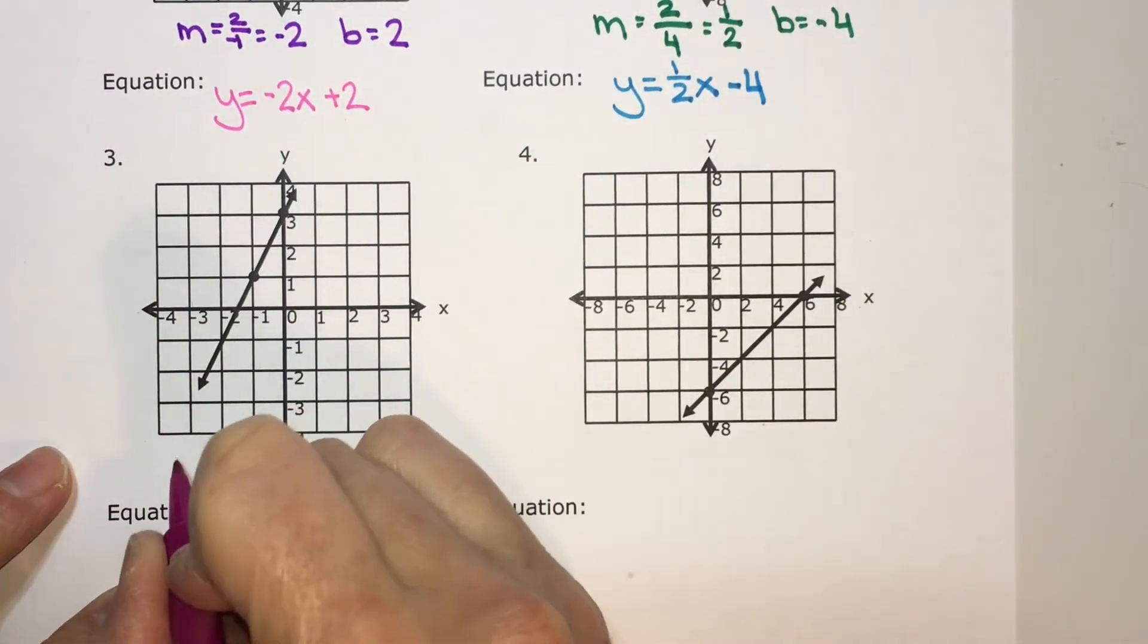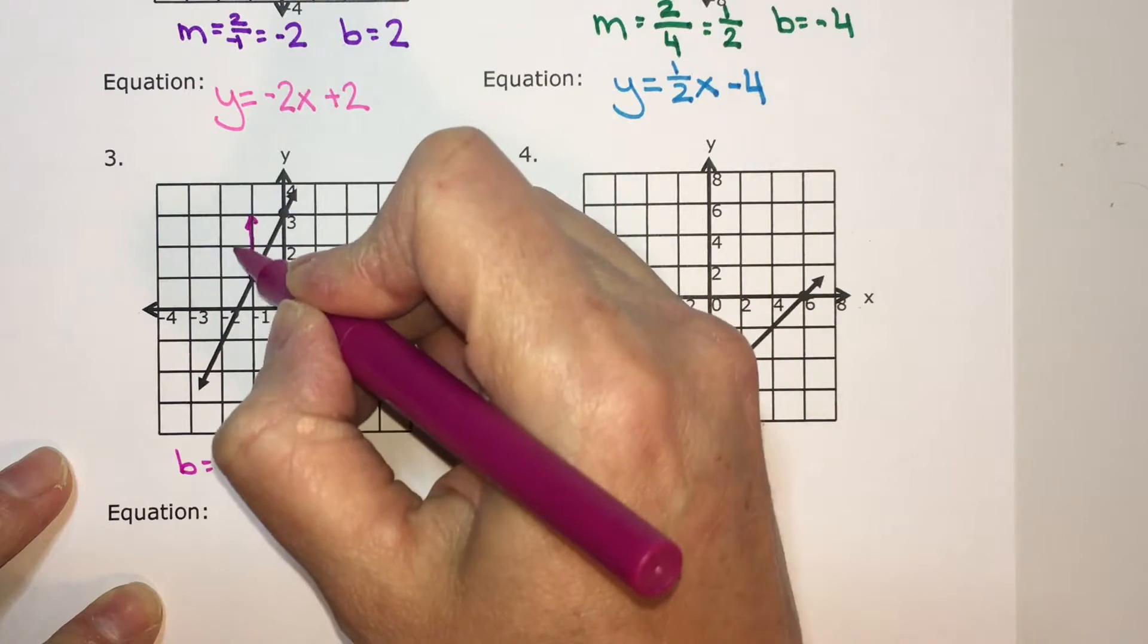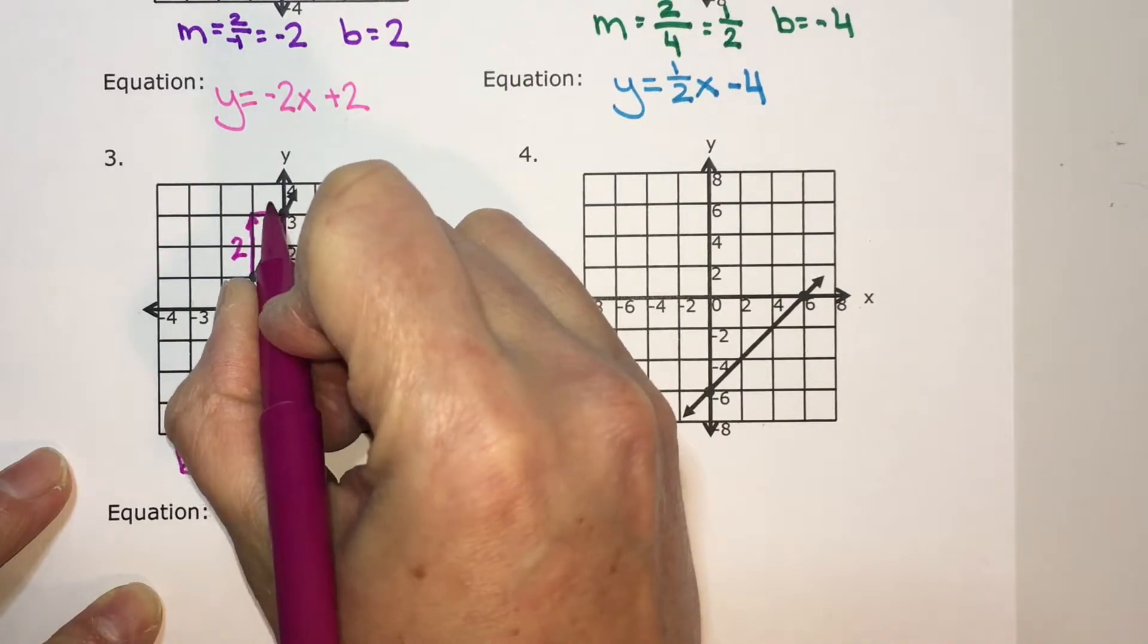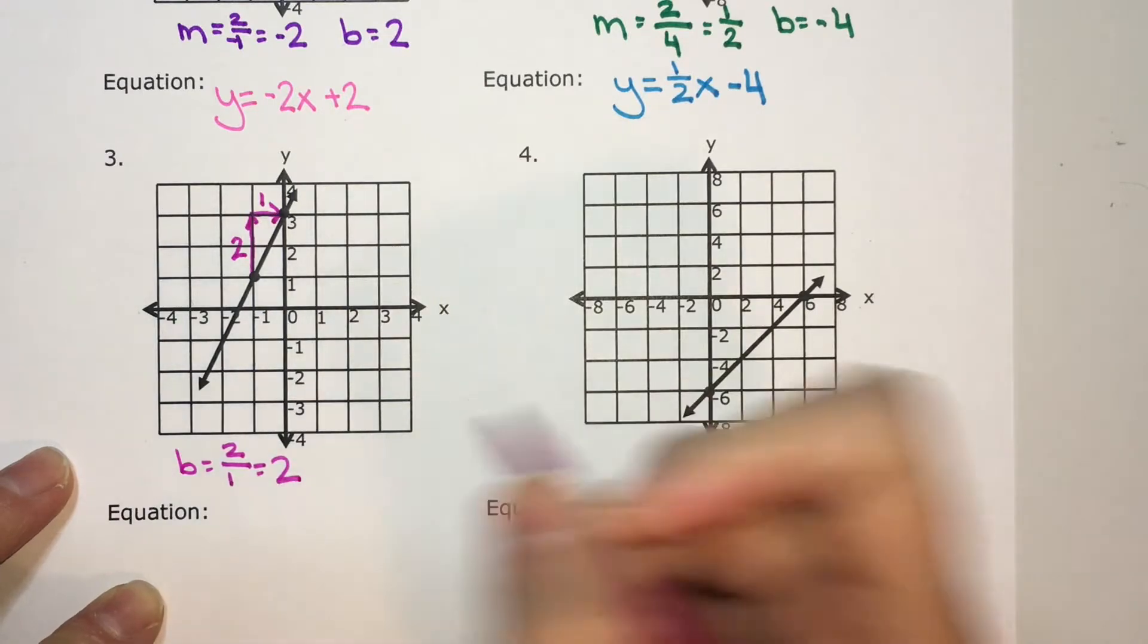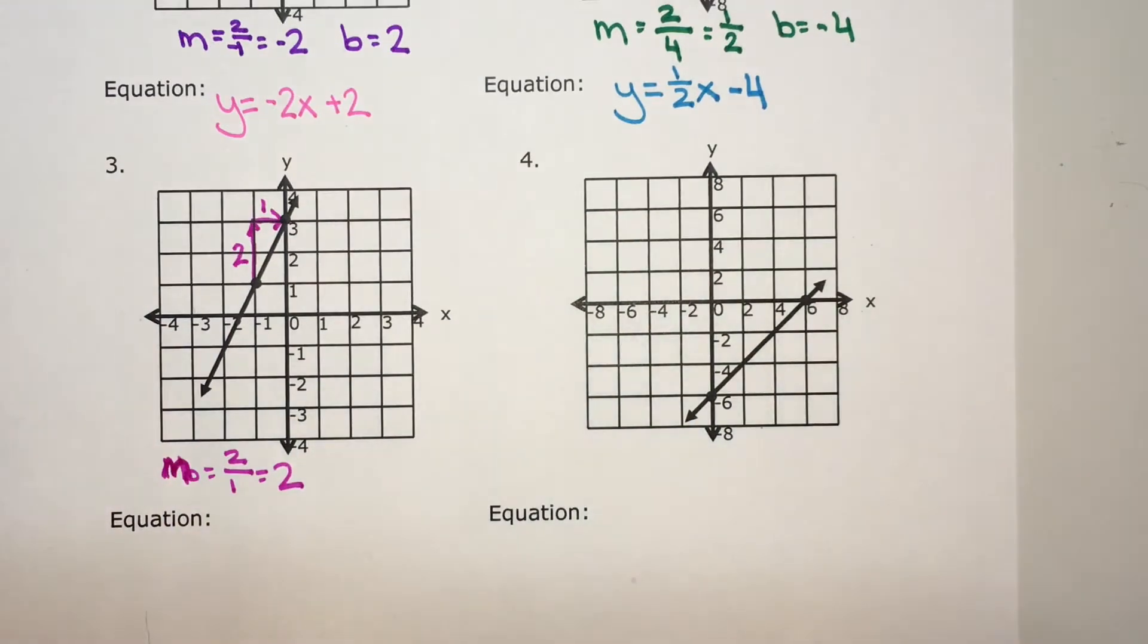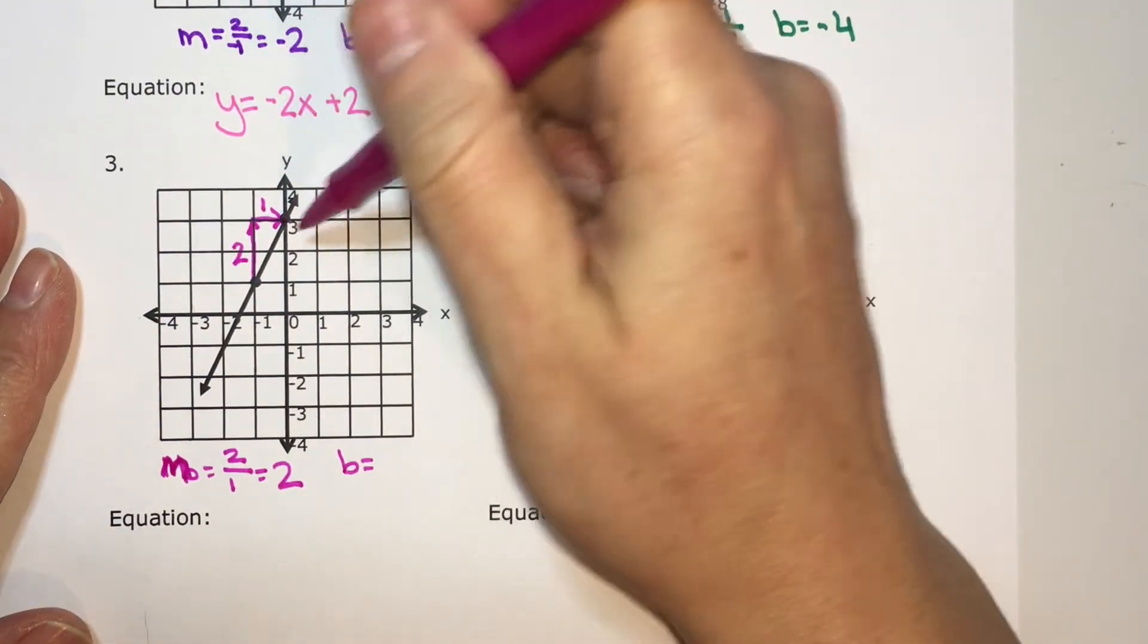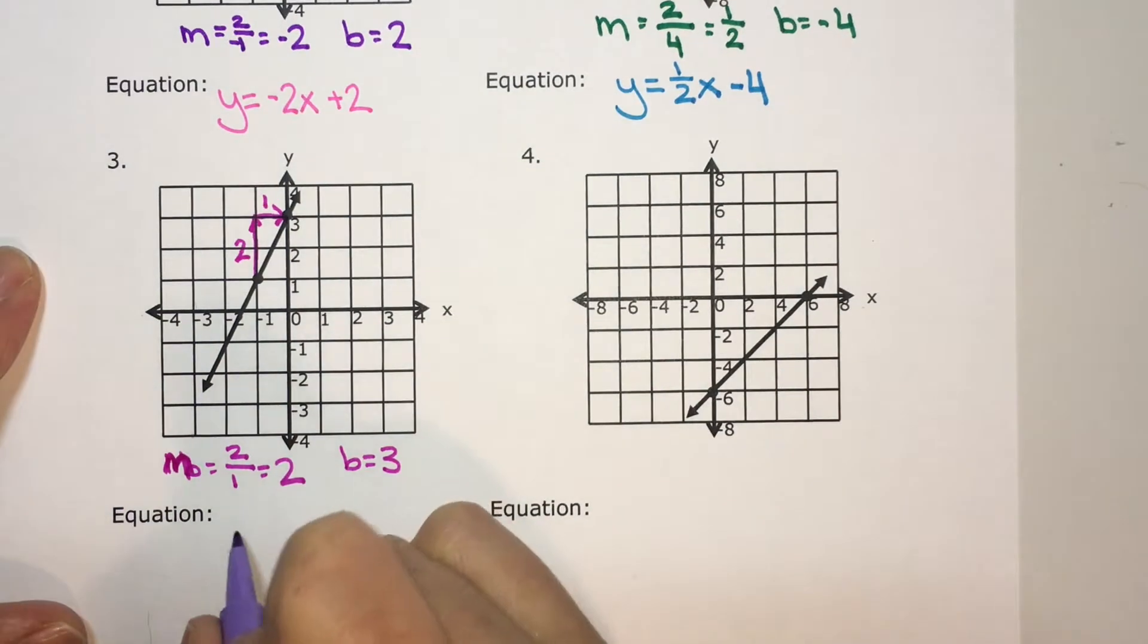Again, slope, rise over run. I start with the bottom point, rise up, and I rise two boxes, and each box is worth one in this graph, so my rise is two. I run over, and I run to the right one box. Two divided by one is two. I always start with your slope. The y-intercept is b, goes through the y-axis at a value of three. So to create the equation, it is y equals 2x plus three.